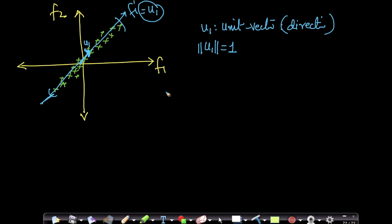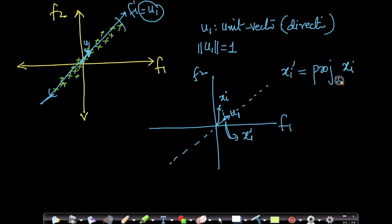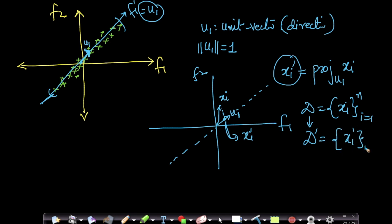Let me draw a much more simplified system. Let's assume this is my f1, this is my f2, and this is my direction u1. I can draw a line along it. Let's assume I have a point xi — a point can be represented as a vector. If I want to project this xi, the projected point here is xi-dash. So xi-dash is nothing but the projection of xi onto u1. My given dataset is xi for i equals 1 to n, and I am creating a new dataset xi-dash from it.